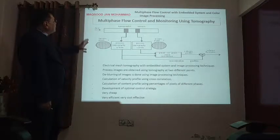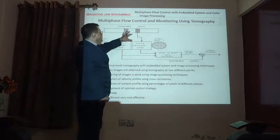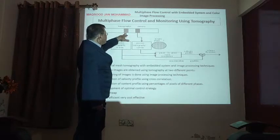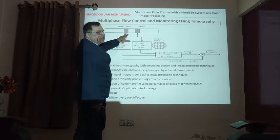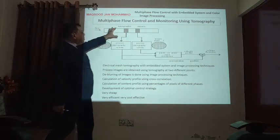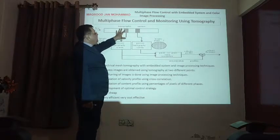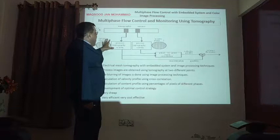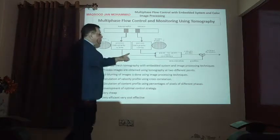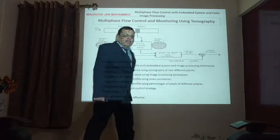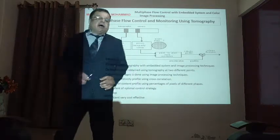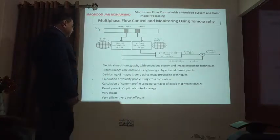The whole plant is installed on a pipe. At two places, we put sensors and capture data. This is a wireless tomographic sensor. Instead of this, we can use electrical capacitance tomographic sensors, as well as high resolution cameras of 20 megapixels or 100 megapixels. We get images through these sensors. Using pixel-to-pixel correlation, we can find out the velocity profile, content profile, and volume profile of the oil, gas, and water. We use electrical mesh tomography with an embedded system and image processing.